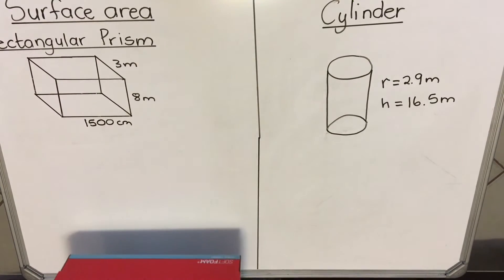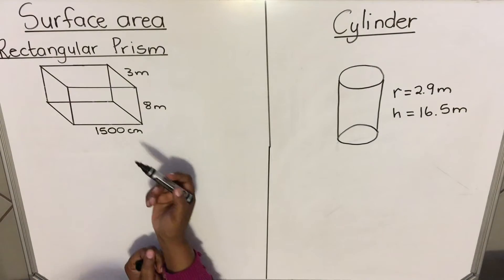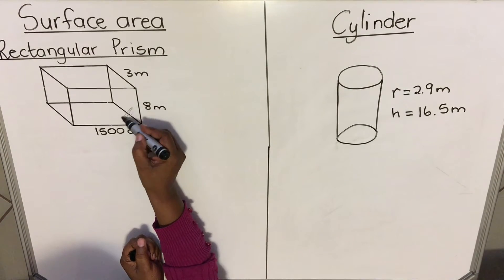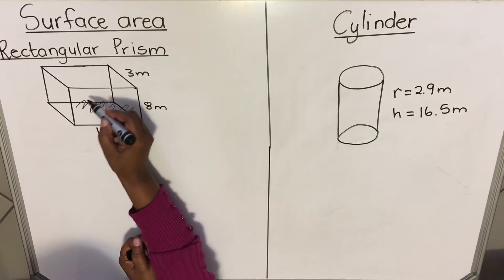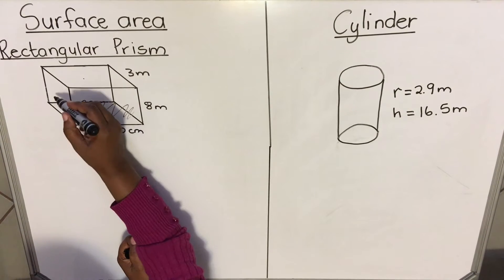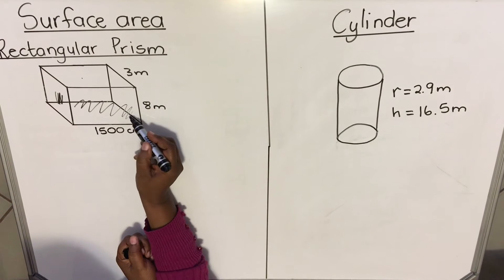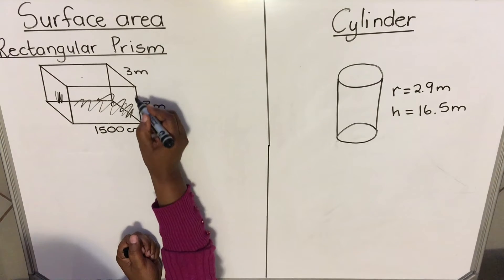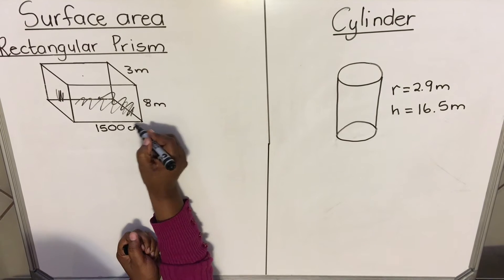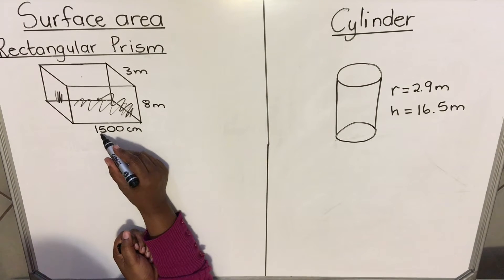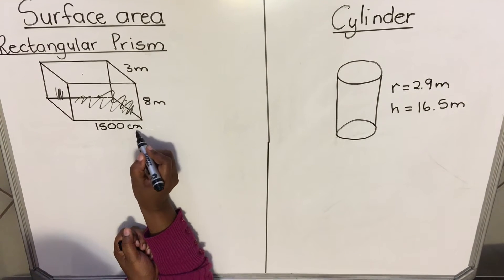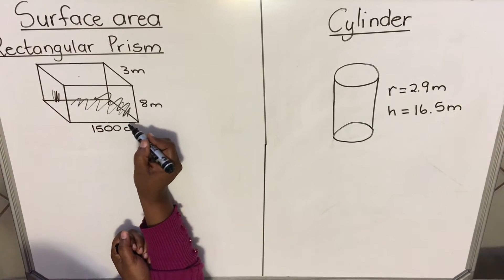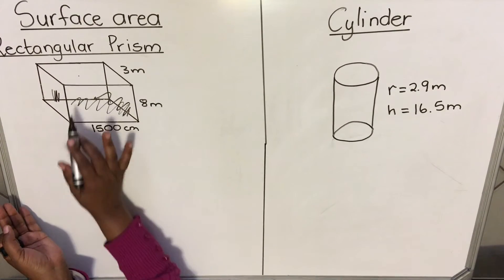Let's look at an example. I've drawn a rectangular prism. You have this rectangle which is the same as the one at the back. Now, this rectangle has a length of 8 meters and a breadth of 1500 centimeters. You can see the units are not the same, so you have to convert everything to the same unit.